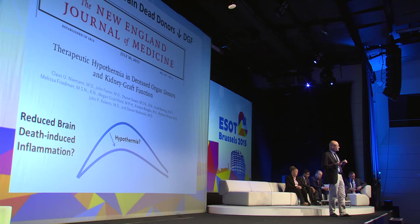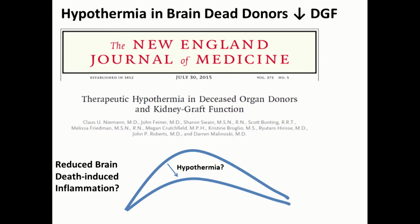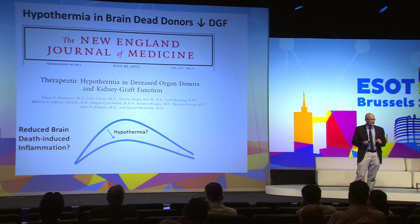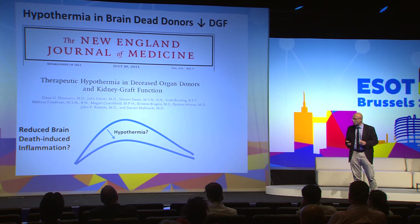A second point I want to make on brain death is this very important, very recent publication — just fresh from the press a month ago — showing that hypothermia may become a new standard in donor management. It was shown that hypothermia led to a reduced delayed graft function in recipients of kidney transplants from donors who had been hypothermic. Whether this hypothermia works by reducing brain death inflammation has yet to be shown.